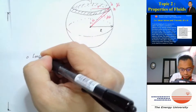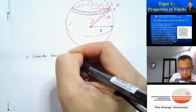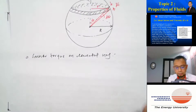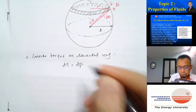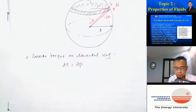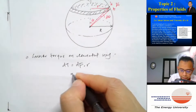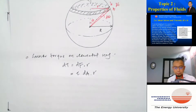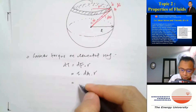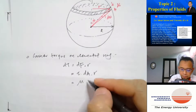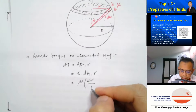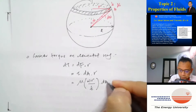Now consider the torque on the elemental ring, which I call dτ. It equals dF times r, where dF is the force on the elemental ring and r is the arm's radius. The force equals the shear stress tau multiplied by dA, so the torque is tau times dA times r. Here tau equals mu times dv/dy, and dv/dy equals omega times r divided by t.